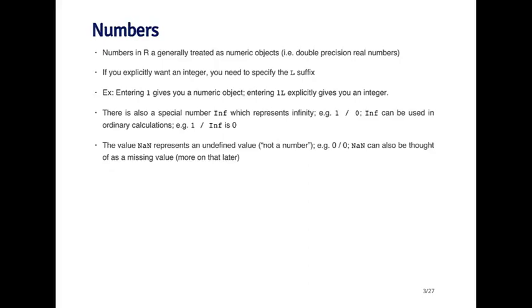Perhaps the most important type of object in R is the number. Numbers in R are generally treated as numeric objects. Pretty much all numbers are treated as double precision real numbers. So even if you're looking at a number like one or two, R thinks of those numbers as numeric objects.